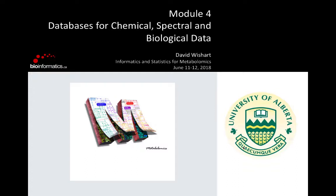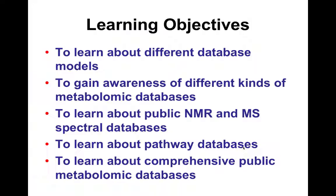This is a lead-in to what you were doing where you're converting spectra to lists. But what do you do with those lists, or how do you actually identify these compounds or peaks, and what are they associated with? We're going to talk about the different types of databases that are available, the different types of database models. We're going to look at some of the publicly available NMR and MS databases, pathway databases, as well as comprehensive metabolomic databases — resources you could use to help analyze and interpret the data you may have just collected.